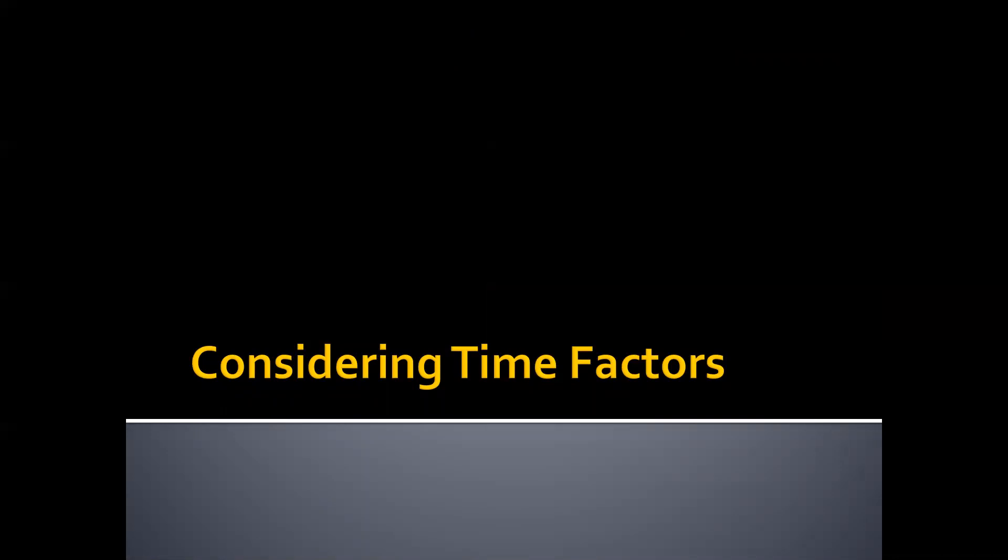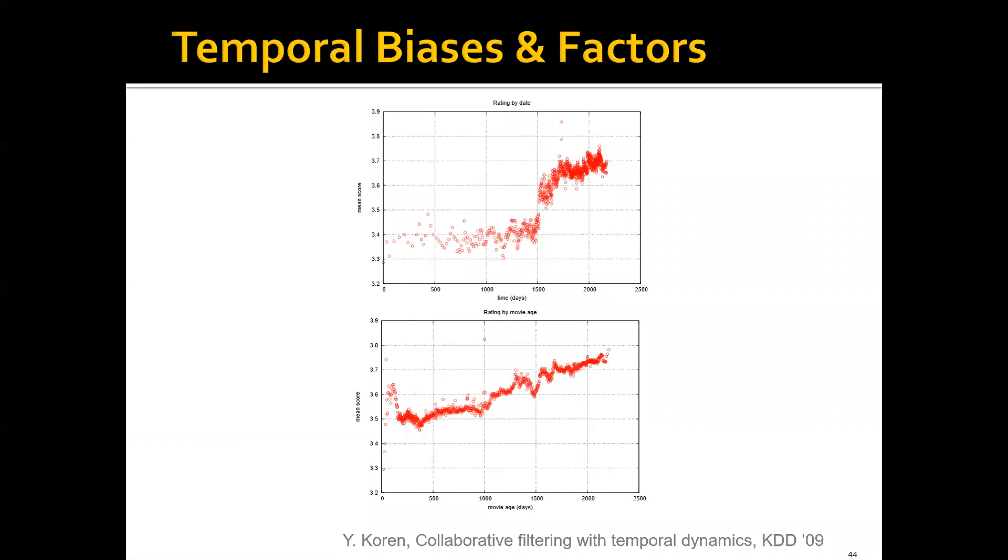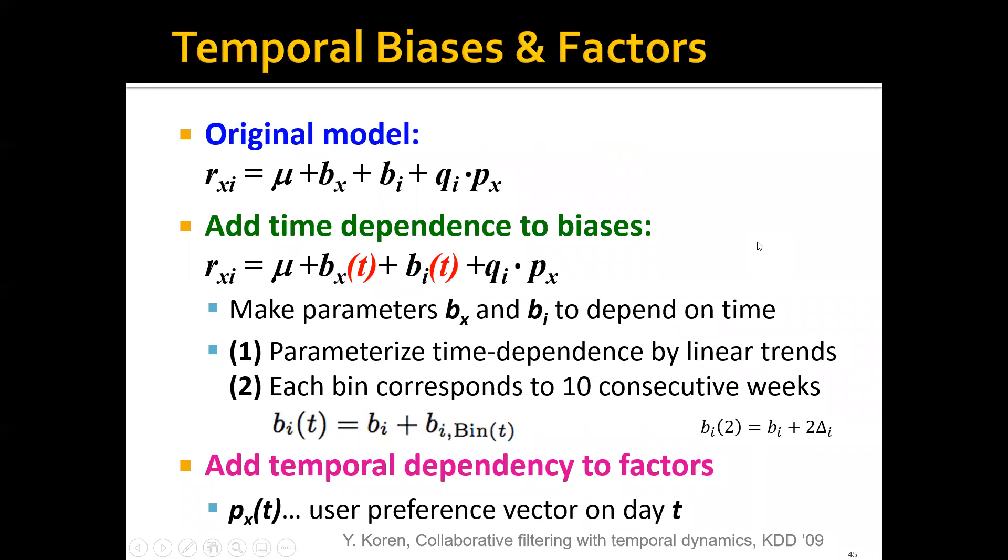The observation is that if you look at the average ratings of all the movies over time, it's actually increasing. People tend to like the movie as time goes by. Based on this observation, we can actually add the time dependence to the bias system. We will make the parameters bx and bi to depend on time.